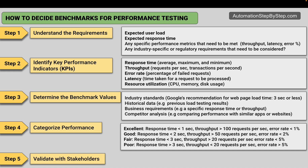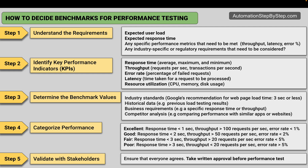Step five is after creating all these categories, benchmark values, and data, we have to validate this with the stakeholders to make sure everyone agrees. We can share our benchmark and take written approval from stakeholders before starting the performance test. When we do our performance test, it is good to create a separate environment and generally not test on a production environment. I hope this was useful — thank you for watching and never stop learning.